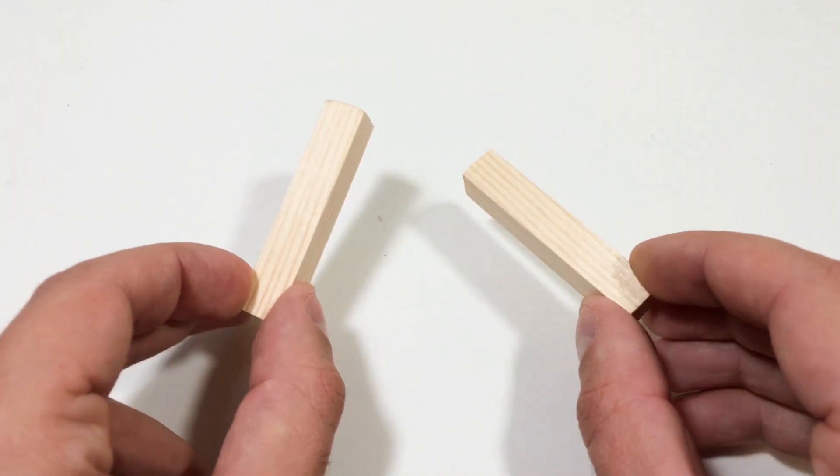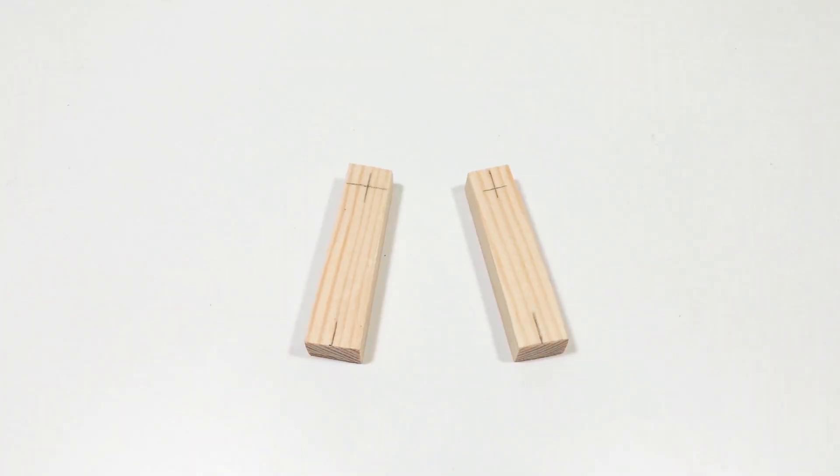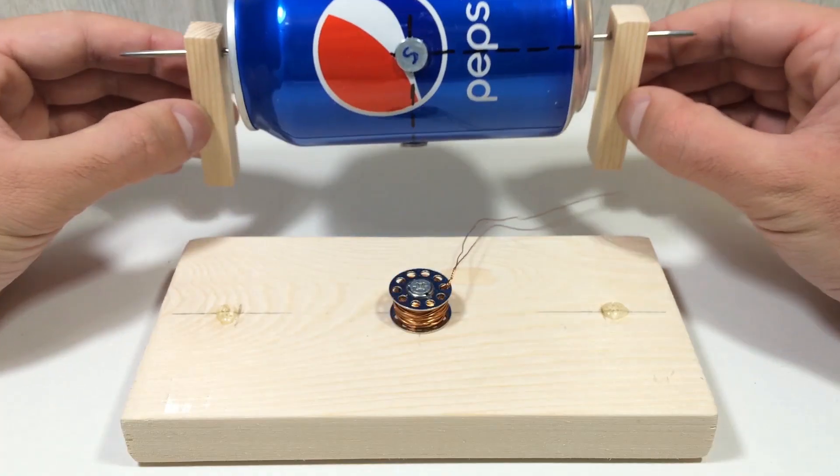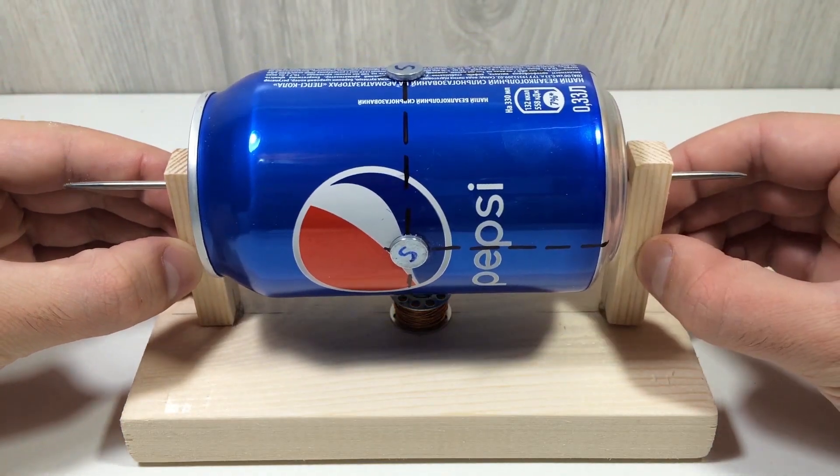To hold the axle in place, build two simple wooden stands and mount them onto the wooden base. Place the can with the axle into these stands so it can spin freely.